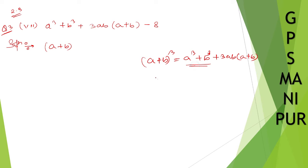From this formula, we will derive a³ + b³ = (a+b)³ - 3ab(a+b). I hope you know this formula, so let us use this formula.